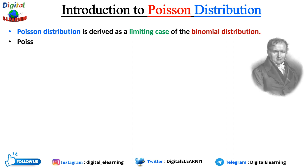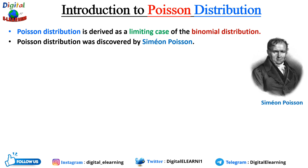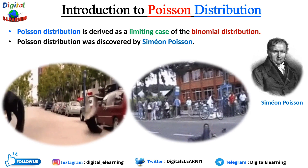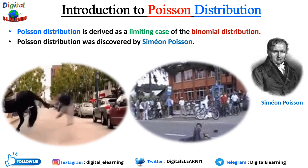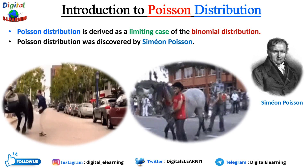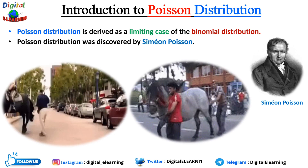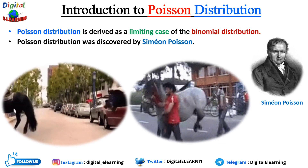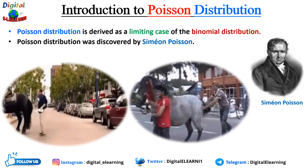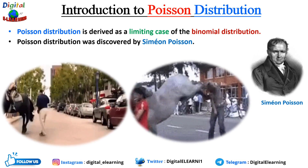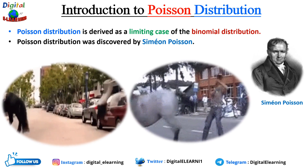The distribution was discovered by French mathematician Siméon Poisson. One of the earliest applications of Poisson distribution was in analyzing the number of deaths caused by horse kicks in the Prussian army. Poisson used the distribution to model the rare event of fatal accidents caused by horse kicks and studied the patterns and probabilities associated with such rare occurrences. It was named after him to honor his contributions to mathematics and statistics.